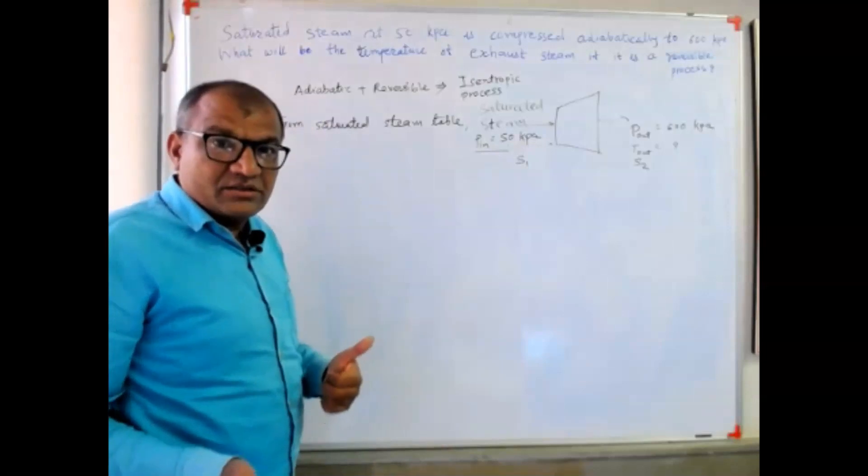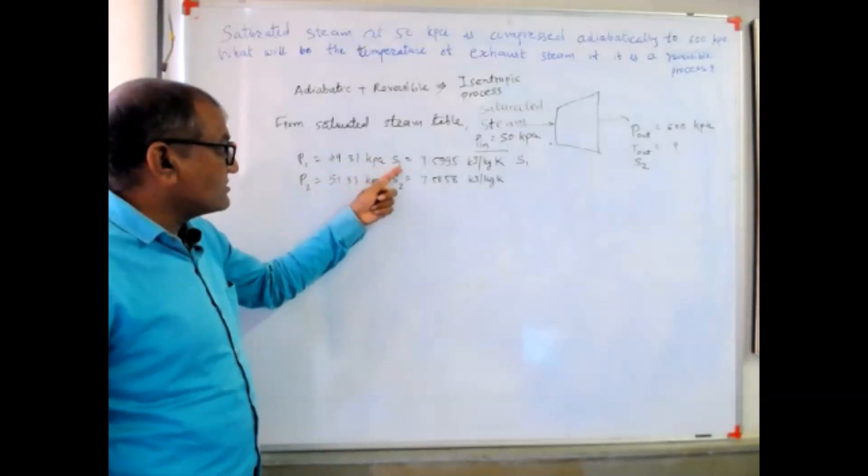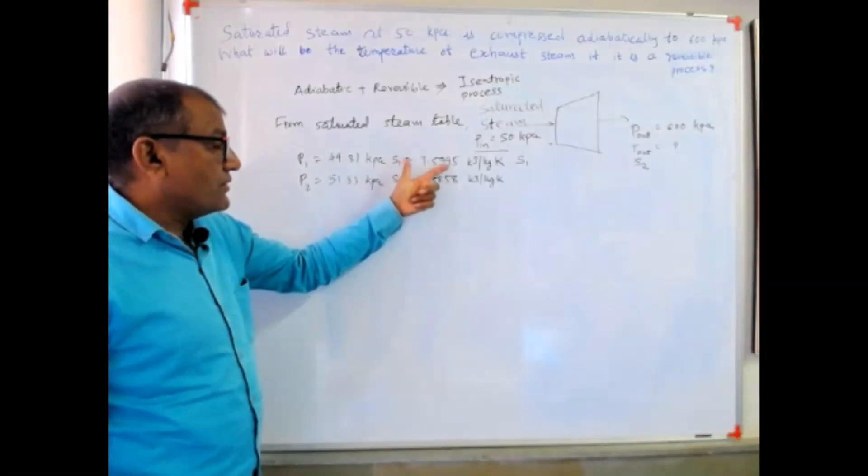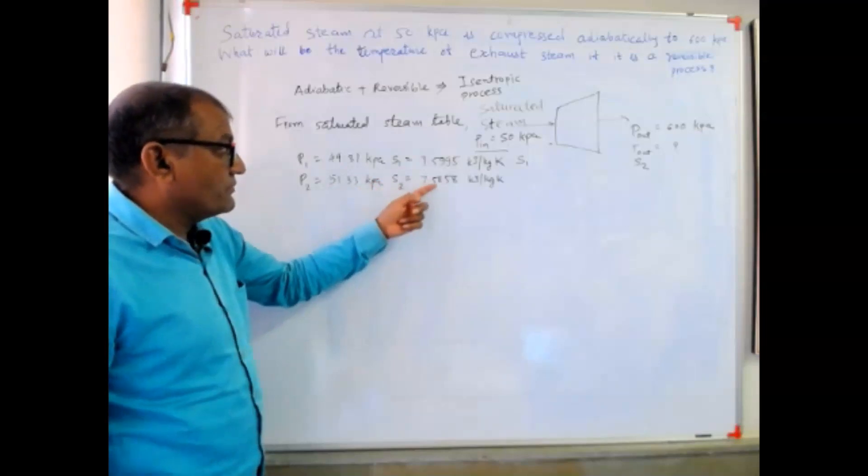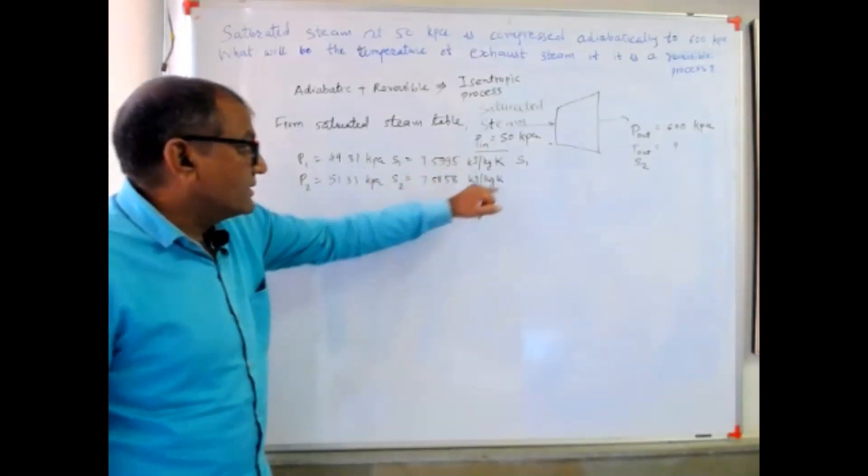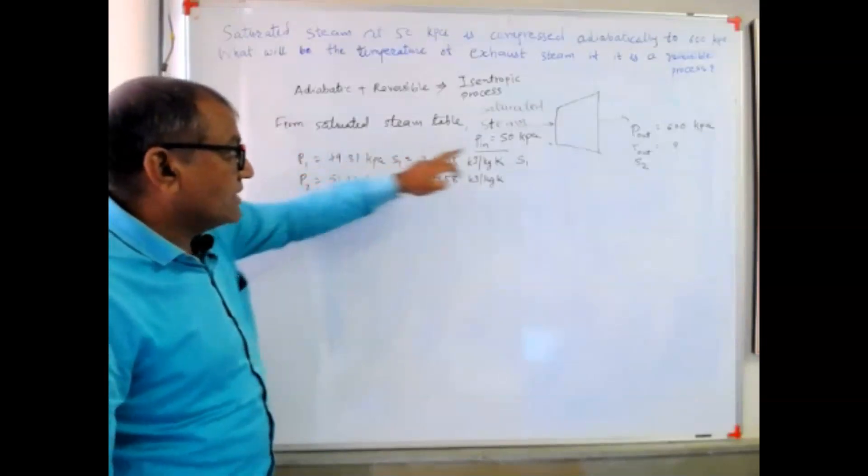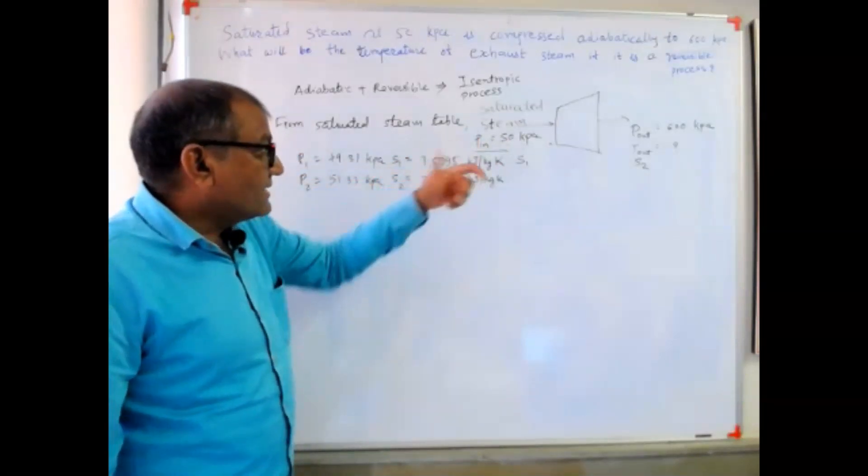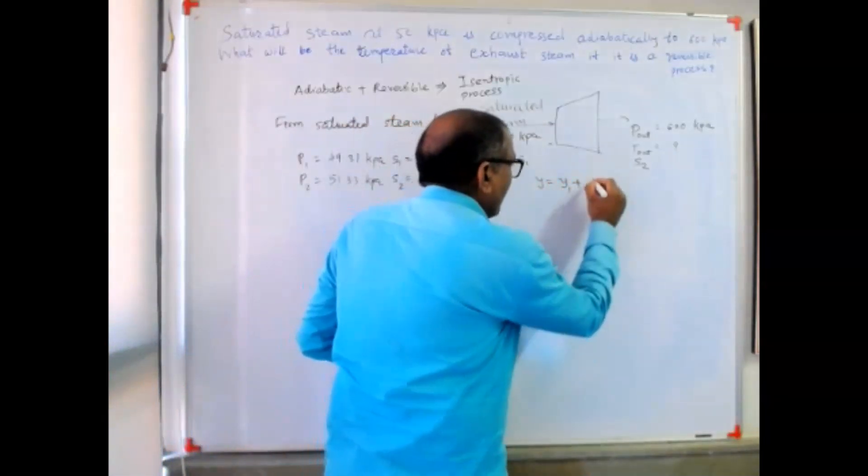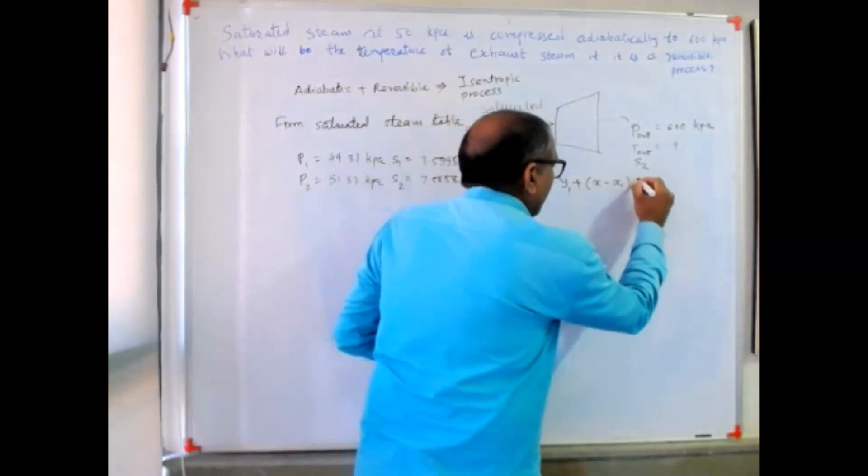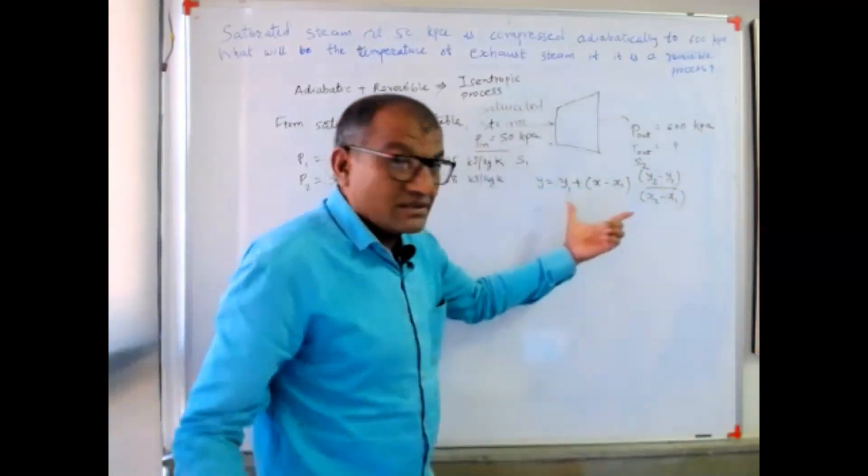So the data available with me are: P1 equal to 49.31 kilopascal, S1 at that pressure the entropy is 7.5995. P2 is 51.33 kilopascal, S2 is 7.5888. I want to calculate S1 between this range because pressure range is given 49 and 51, and our pressure is 50 kilopascal. I can use linear interpolation. Do you remember the equation of linear interpolation? Yes, x minus x1 equals y2 minus y1 over x2 minus x1.